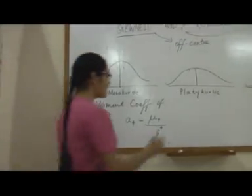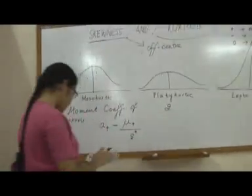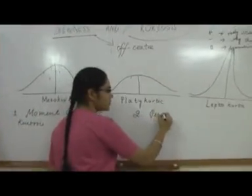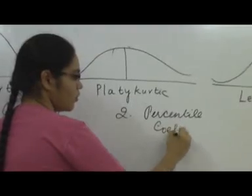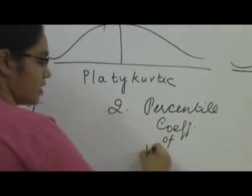Nothing difficult there. The second coefficient for kurtosis is the percentile coefficient of kurtosis.